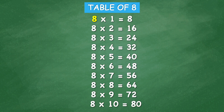Table of 8: 8 times 1 equal 8, 8 times 2 equal 16, 8 times 3 equal 24, 8 times 4 equal 32, 8 times 5 equal 40.